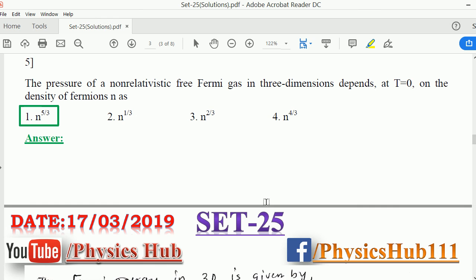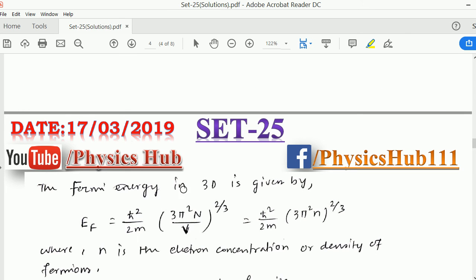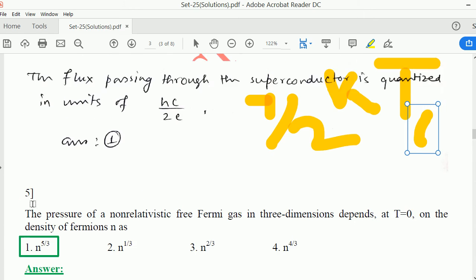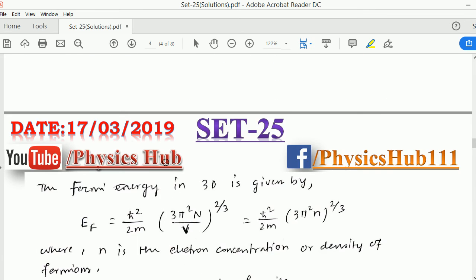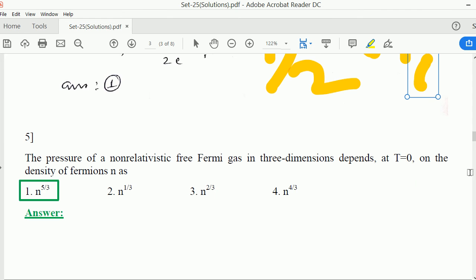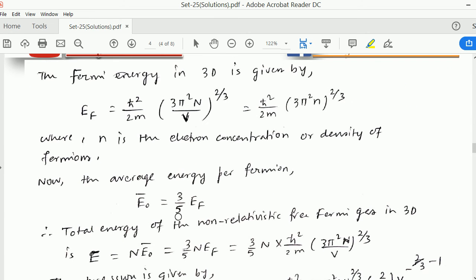Now question number 5. The pressure of a non-relativistic free fermion gas in three dimensions depends at T equals 0 on the density of fermions. This is a very standard question. We have to find out the pressure. Before finding the pressure, you should know the fermion energy. The fermion energy in 3D is given by this well-known expression: EF equals h-bar squared over 2m times (3 pi squared N/V) to the power 2/3.